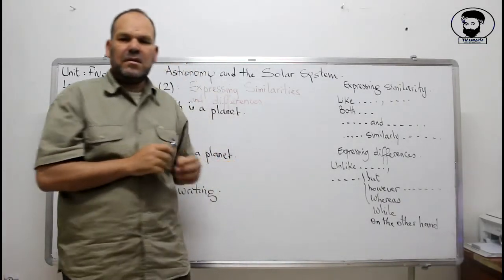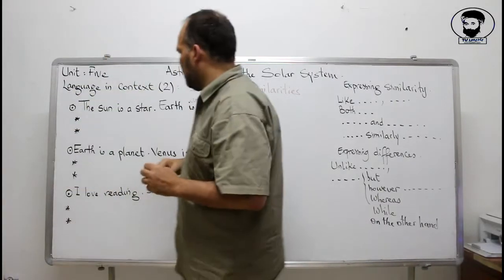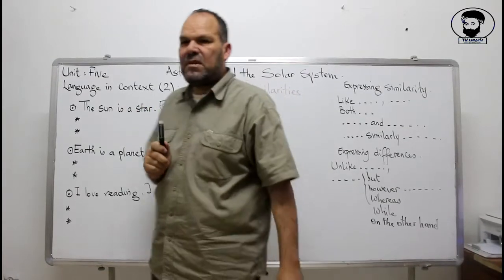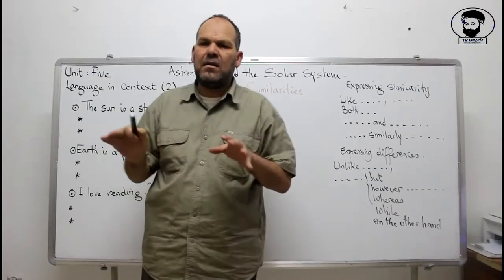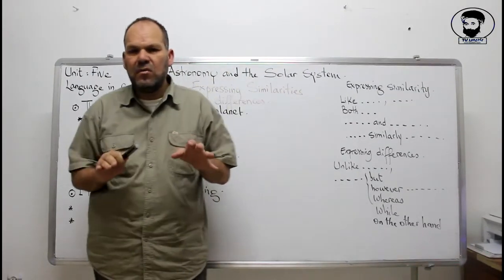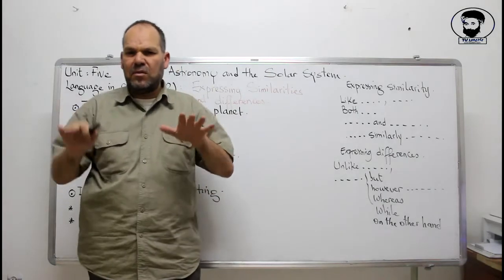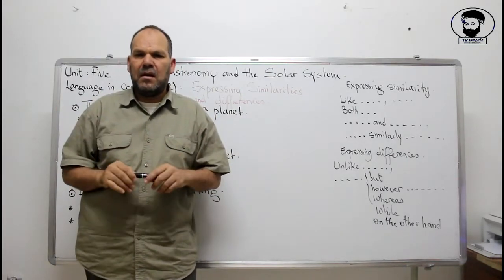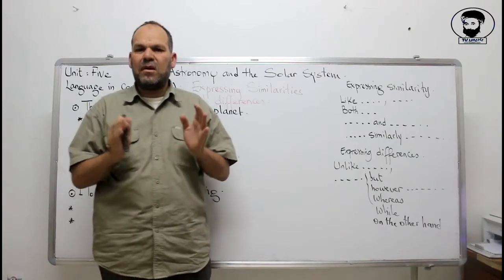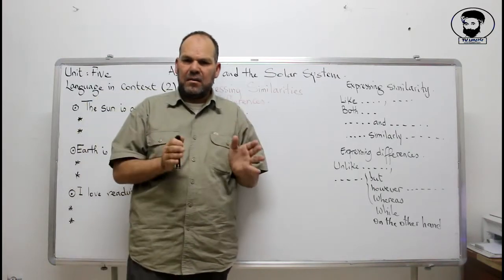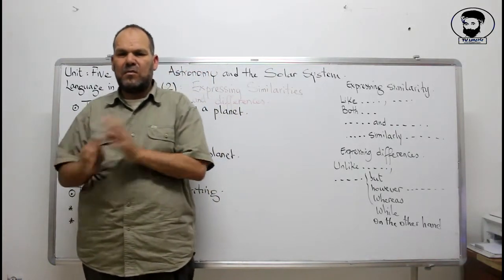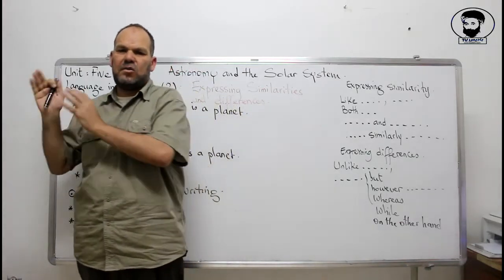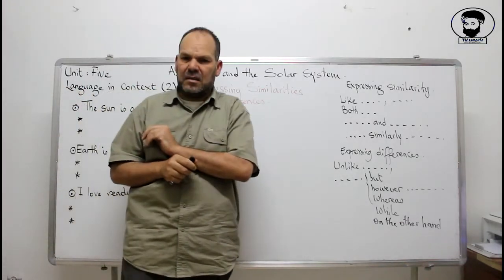In this lesson, in language, in context one, we've seen how to compare between two things. When we compare between two things, we are certainly comparing — that's the comparative form. Now, when we compare between one thing and many other things, for example comparing Earth to Venus, Mars, and Jupiter, we call this the superlative.